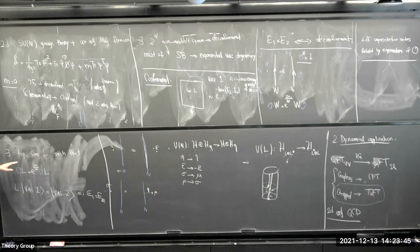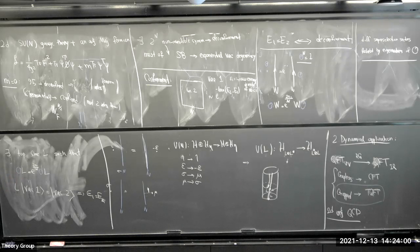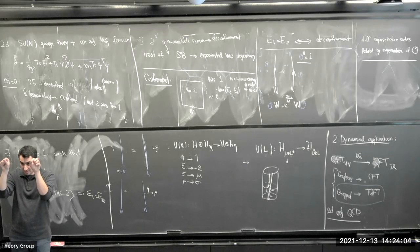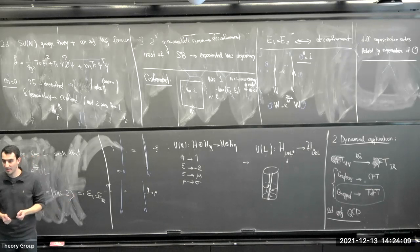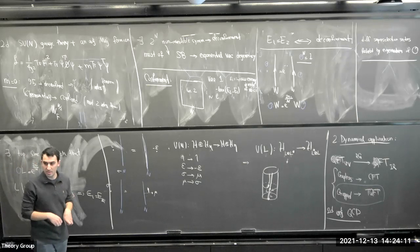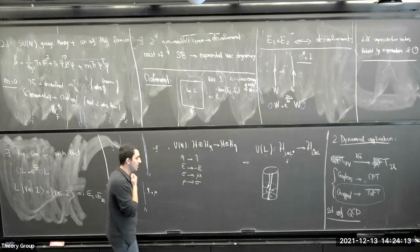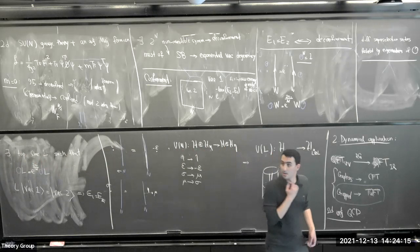The key fact is that there exists a topological line L which is charged under the one-form symmetry, satisfying a specific commutation relation with O. This means acting with L on vacuum 1 creates something in the second superselection sector, but because the line is topological it doesn't change the energy — it commutes with the stress-energy tensor. So the existence of this topological line implies E1 = E2, proving de-confinement. The Wilson lines are screened because you can break them and insert the topological line in between — so they cannot have area law.